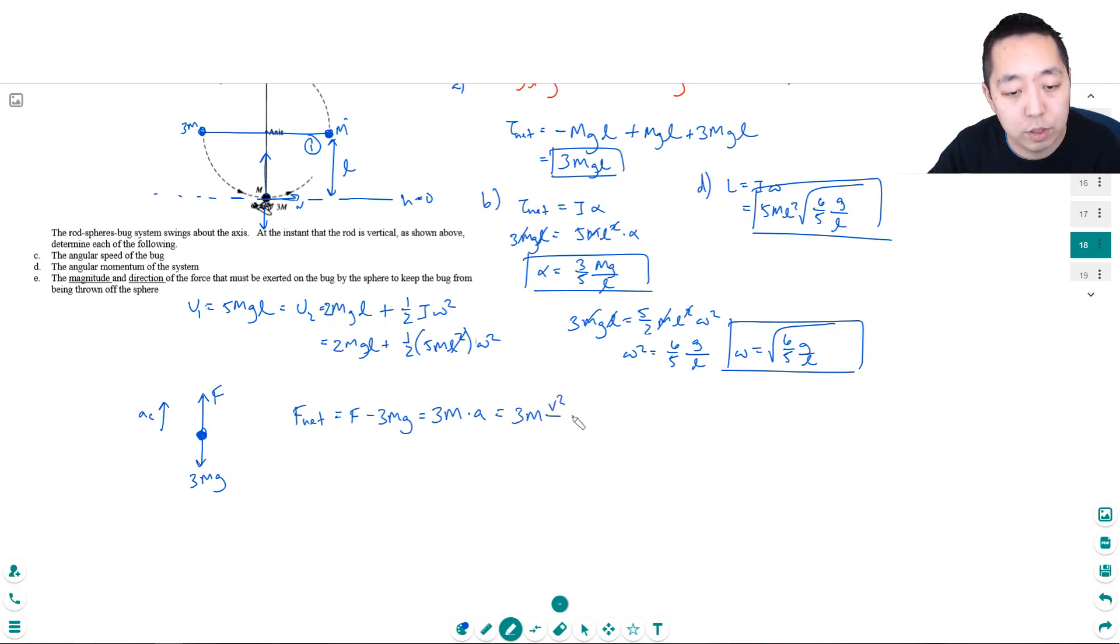The net force is F minus 3mg, and that would have to equal his mass, which is 3m, times the acceleration—centripetal acceleration—so that's v squared over r.